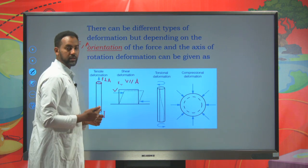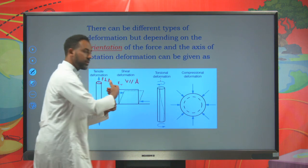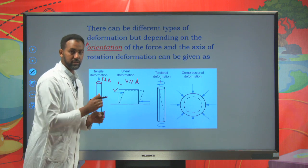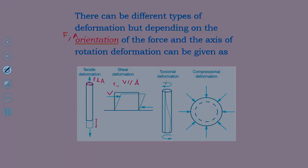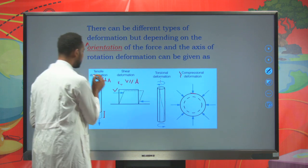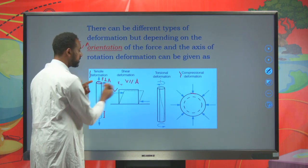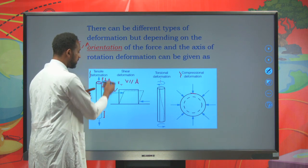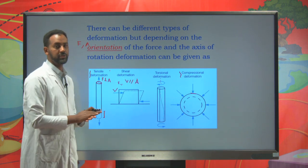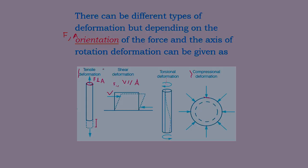Torsional deformation is exerted about an axis, causing the objects to be twisted. Torsional deformation results from force acting about an axis, forming a twisting of objects. Compressional deformation also has the force perpendicular to the cross-sectional area, but it leads to compression — a shortening in size. So compressional and tensile deformation both involve perpendicular force, but tensile leads to elongation while compressional leads to compression.